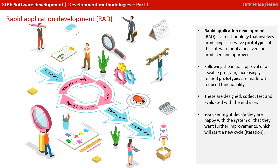A much better evolution of the waterfall model is Rapid Application Development, or RAD — a methodology that includes producing successive prototypes of the software until a final version has been produced. After initial approval of a feasible program, we enter a stage of requirements analysis, design, coding, testing and evaluation to produce a prototype. Each prototype is shown to the user who provides feedback, leading to further design, coding, and evaluation. At any point, the user might decide they're happy or want further improvements, which leads to a new requirement and the start of a new iteration.